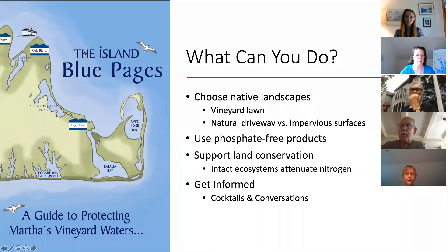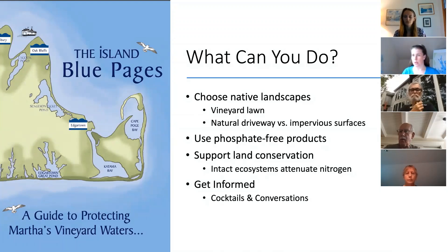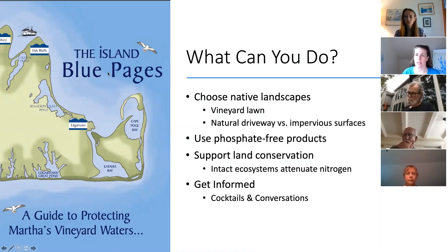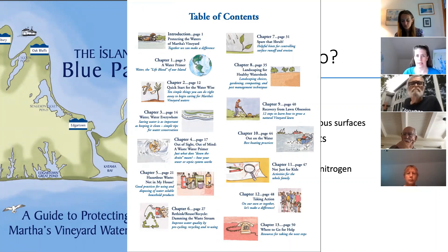One thing people always ask is what can you do? Choosing native landscapes and having intact ecosystems — encouraging that in people's individual lawns, having less impermeable surfaces, more natural driveways. The more intact our habitats are, the more we can encourage that natural ecosystem attenuation of nitrogen. There are lots of great tips in the Island Blue Pages, found on the Commission's website or our website — tips on landscaping, ways to reduce water usage, hazards, and more. A bunch of nonprofits on the vineyard worked hard to put it together.